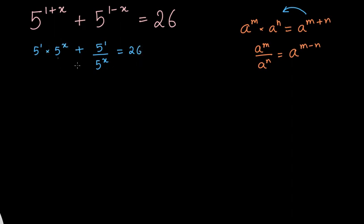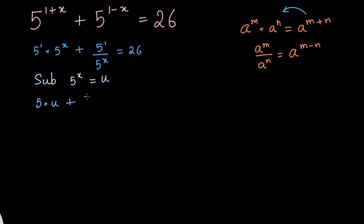Now we see that we have the term 5 to the power x in our equation two times. So let us substitute 5 to the power x with a variable u. So the equation will change — it will become 5 times u plus 5 divided by u equals 26.